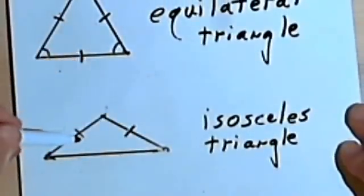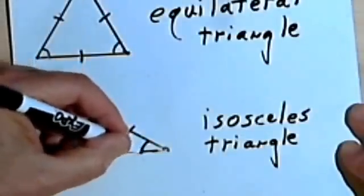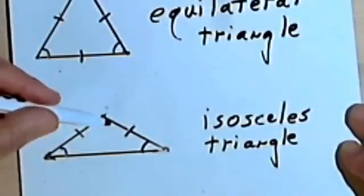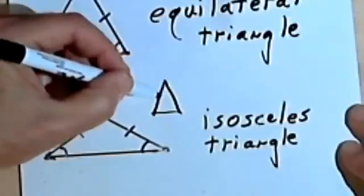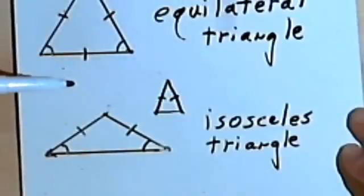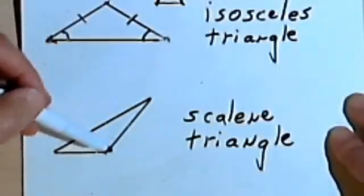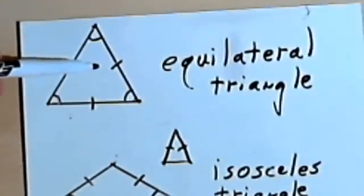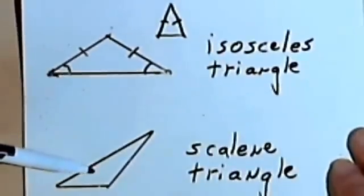If we only have two sides that are equal, like this, then we've got an isosceles triangle. If two sides are equal, two angles will be equal. We can have an isosceles triangle which is obtuse — as in this case where one angle is greater than 90 degrees — or we could have an isosceles triangle which is acute because all three angles are less than 90 degrees. If none of the angles are the same and none of the sides are the same, then we have something called a scalene triangle. So: three sides the same — equilateral triangle; two sides the same — isosceles triangle; none of the sides the same — scalene triangle.